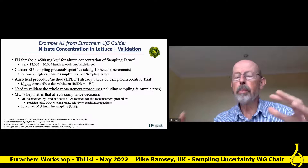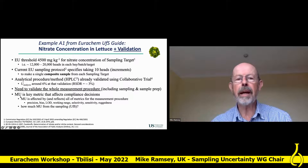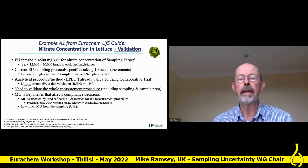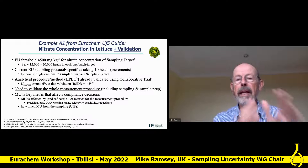We need to validate the whole measurement procedure, including the sampling and sample prep. The measurement uncertainty is the key metric that affects the compliance decision. It's affected by all the metrics traditionally used in method validation — precision, bias, limit of detection, working range, selectivity, sensitivity, ruggedness — they are expressed in the measurement uncertainty of the final result. We can judge the fitness for purpose using that. The question is how much of that measurement uncertainty is arising from the sampling, and that's how we judge fitness for purpose and decide how close it is to the target measurement uncertainty.